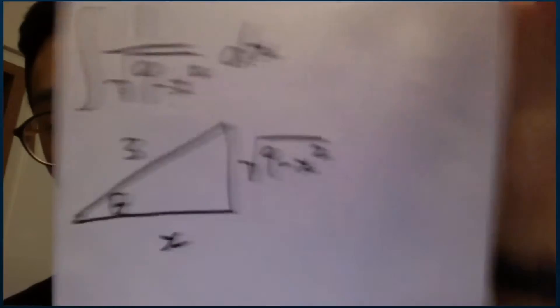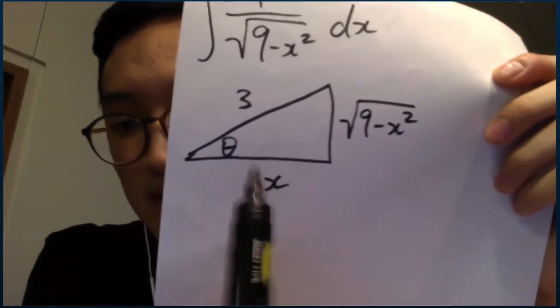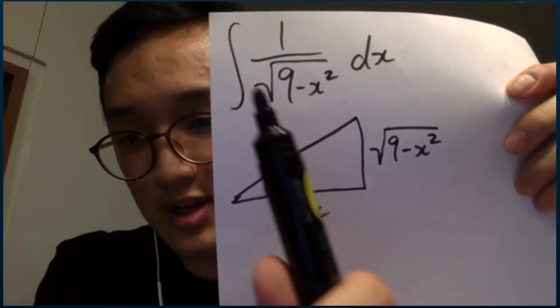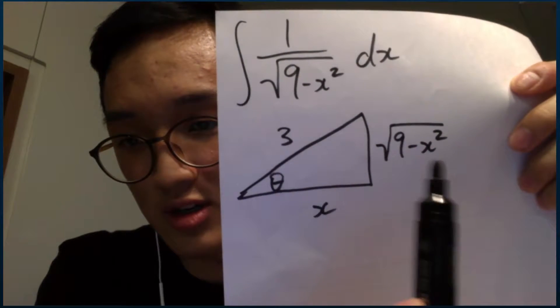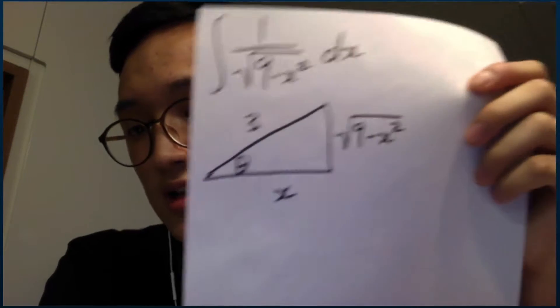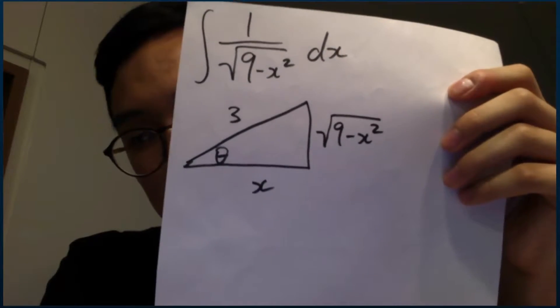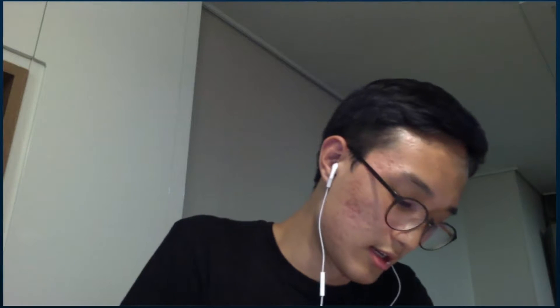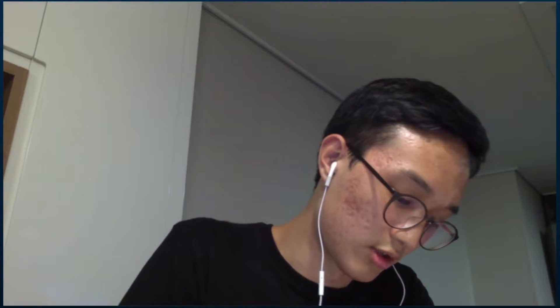Now if you look at this triangle, you can see that the side lengths here all follow the Pythagorean theorem, and we have this section here, this side length, the square root of 9 minus x squared, as one of the lengths of the legs. And now if we express sine theta and cosine theta in terms of x, we can get some pretty interesting expressions that will help us solve the integral.